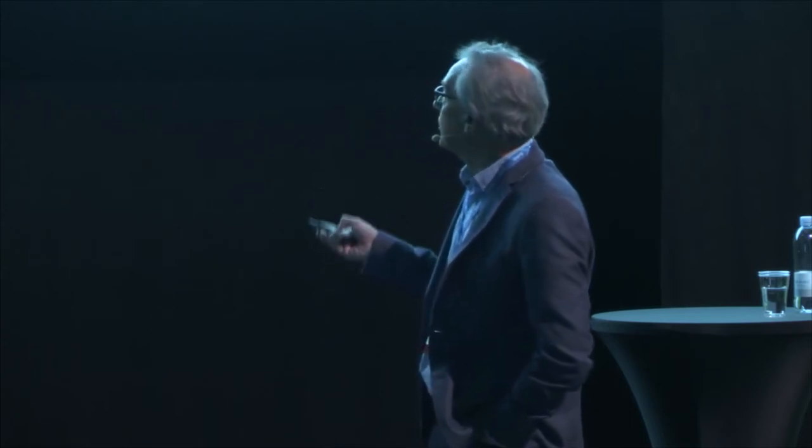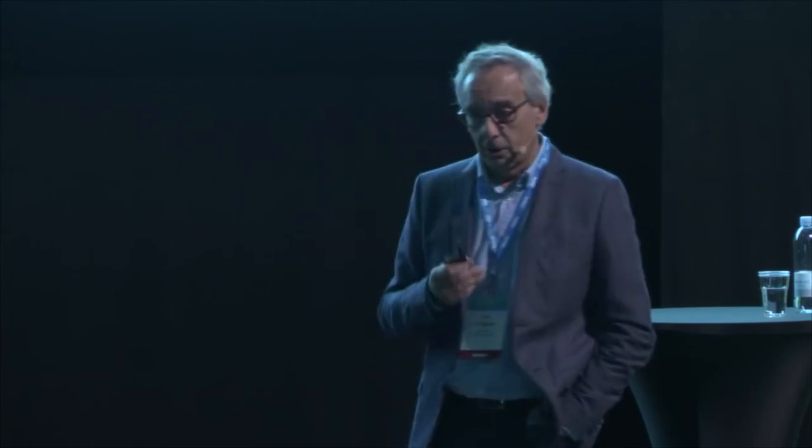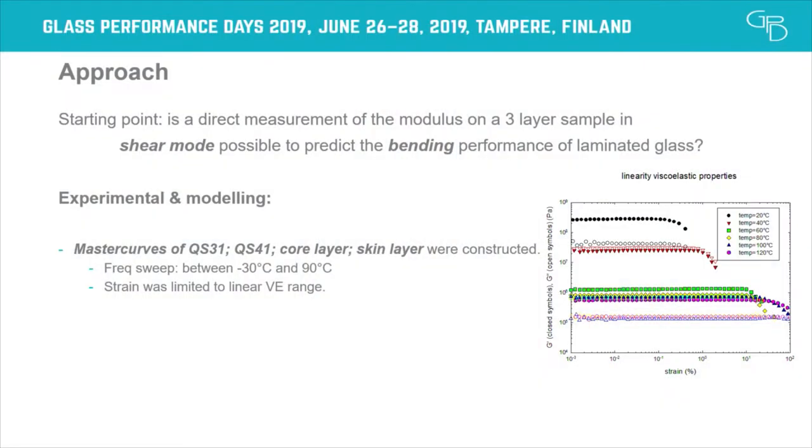Why stop at 90 degrees? Above 90 degrees, the material becomes so soft it brings no additional property to the multi-layer. Also, beyond 90 degrees, the TTS principle is known to fail for PVB. The strain used in measurements was limited to the linear viscoelastic region.